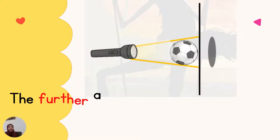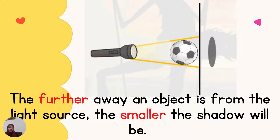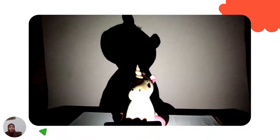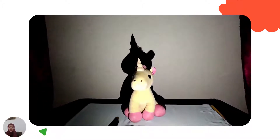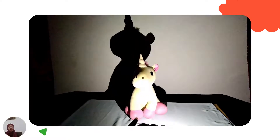But the further away an object is from the light source, the smaller the shadow will be. If we take the object away from the source of light, or take the light source farther away from the object, the shadow will be smaller — because the object is blocking less light. If we take the light closer to the object, a bigger shadow forms; if we take the light source away from the object, a smaller shadow forms.